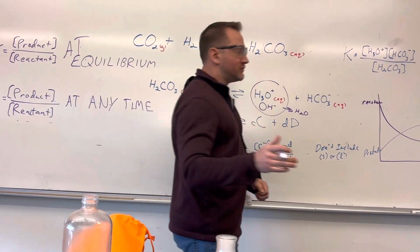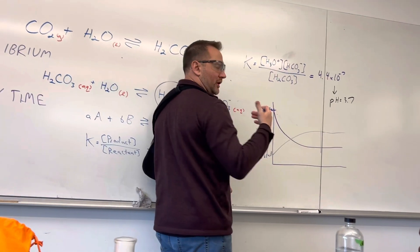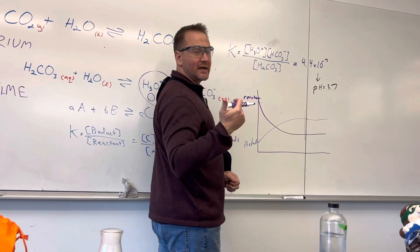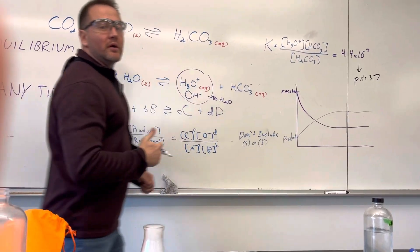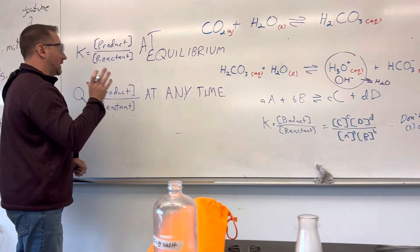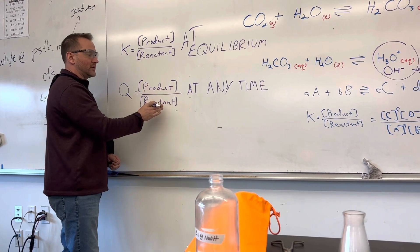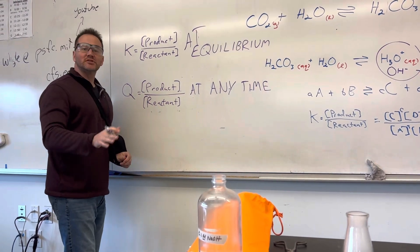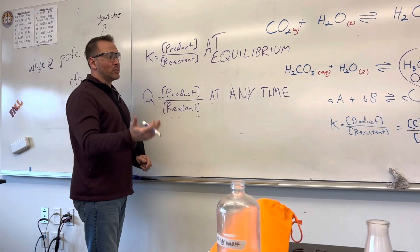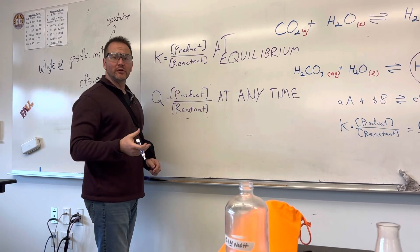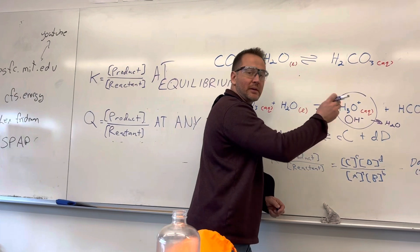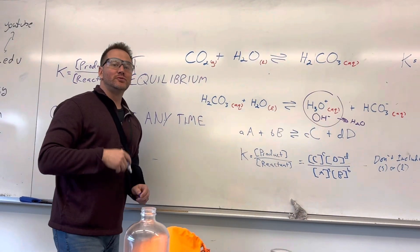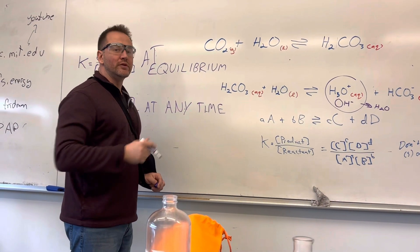Now if you think about what that's gonna do to our K value—I mean our ratio of products to reactants—we're removing some of the product. So then we would have a situation where we would be calculating Q. Now Q is that ratio of product to reactants, the same expression, it's just not necessarily at equilibrium. And we'll see that when I add the sodium hydroxide and I remove some of that hydronium ion, some of that product, the reaction is going to shift in order to move in that forward direction.